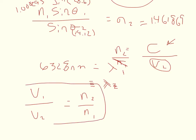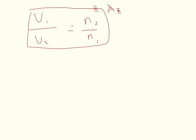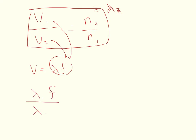We have this proportionality constant defining what an index of refraction is. Note that V2 is in the denominator while N2 is in the numerator — don't get those mixed up. Now I'm going to define velocity in terms of wavelength: velocity equals wavelength times frequency. Substituting in, we get wavelength 1 times frequency over wavelength 2 times frequency equals N2 over N1. The frequency doesn't change between media, so it cancels out, giving us N2 over N1 equals lambda 1 over lambda 2.